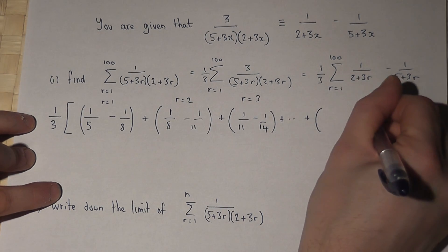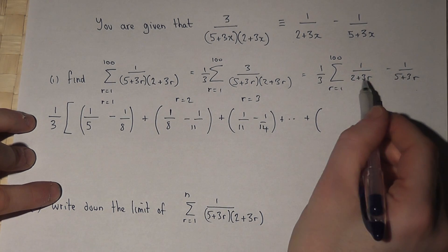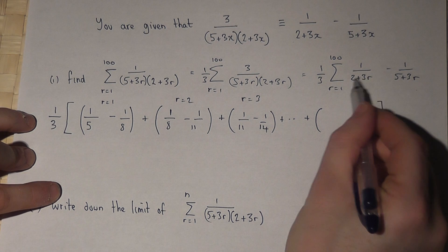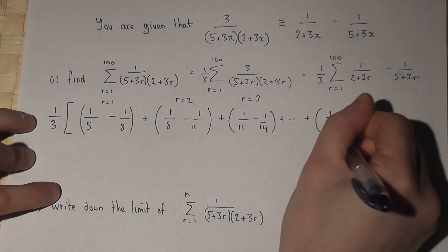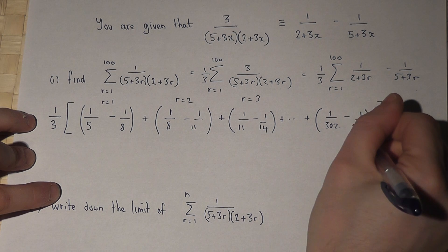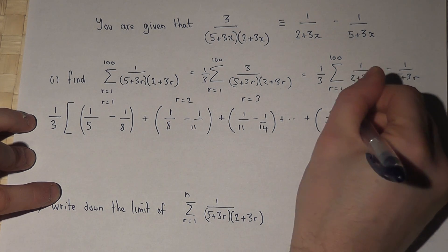So 3 times 100 is 300 and 2, minus 1 over 300 and 5. So that's when r is 100.